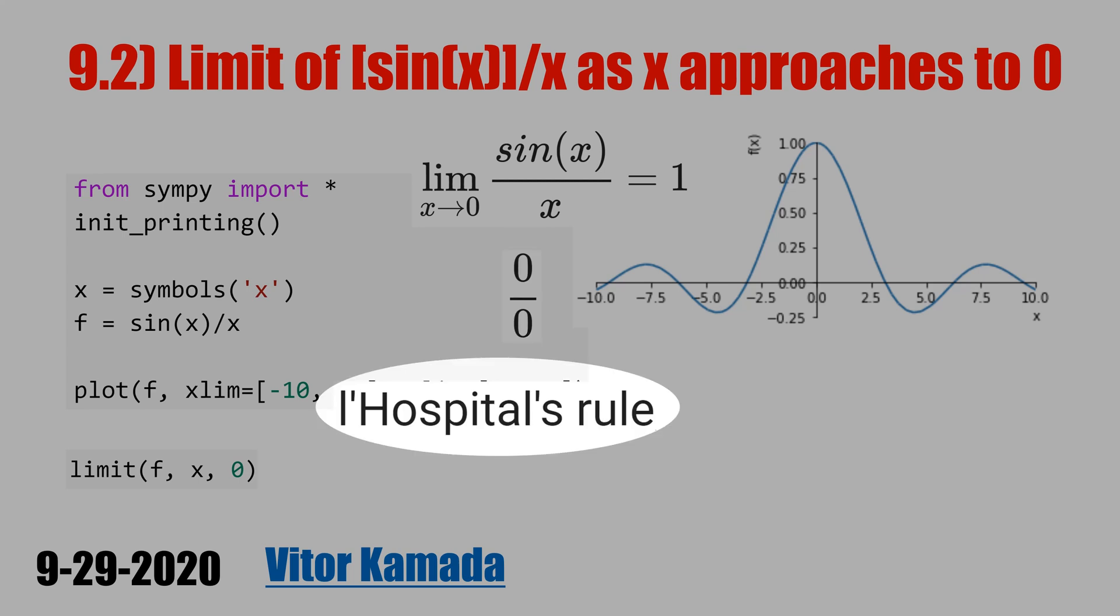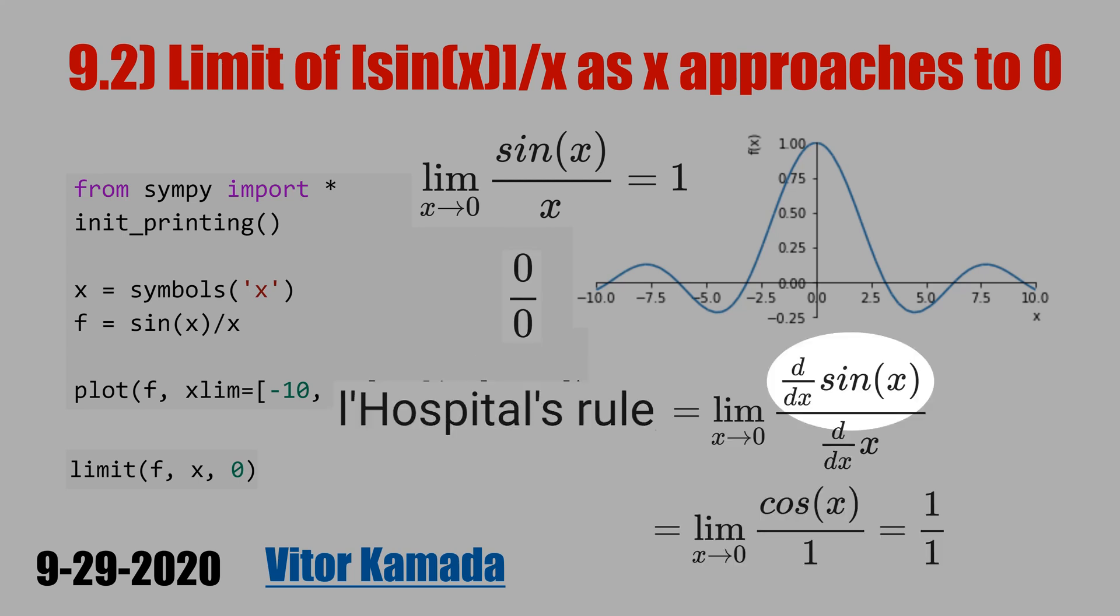Therefore, we can apply L'Hôpital's rule. We take the derivative of sine x and take the derivative of x. Then you get cosine x divided by 1, and this equals 1 because when x equals 0, the cosine equals 1.